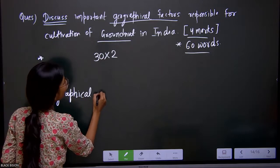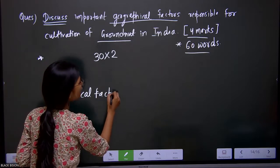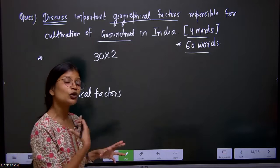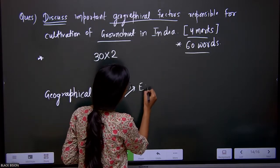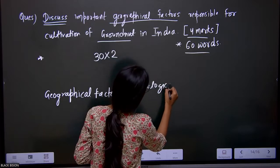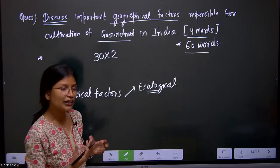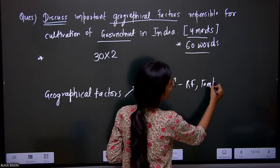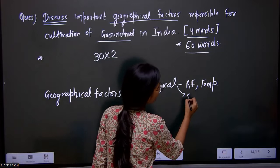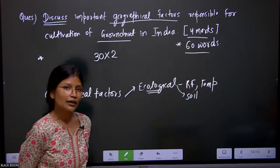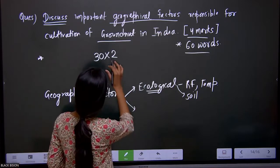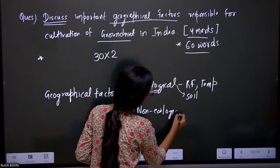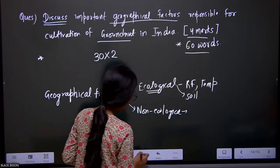When I say geographical factors or geographical conditions, we can primarily categorize them into two parts. The first are geographical factors associated with ecology — the ecological factors. When I say ecological factors, we have to talk about climate, rainfall requirement of this particular crop, and temperature requirement. Apart from this, we also need to talk about the soil condition important for the cultivation of groundnut. The second paragraph covers the non-ecological factor.